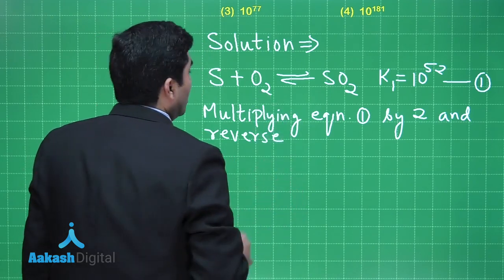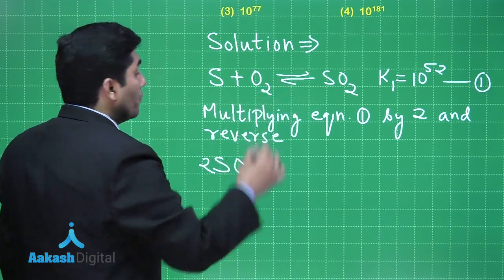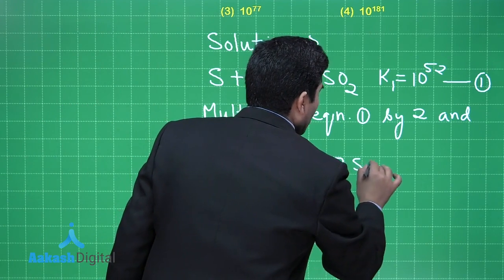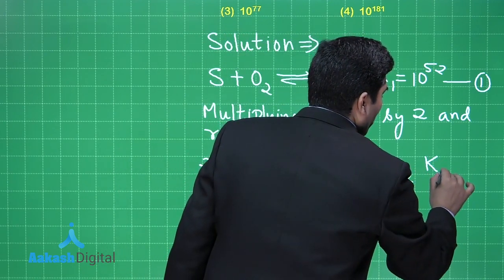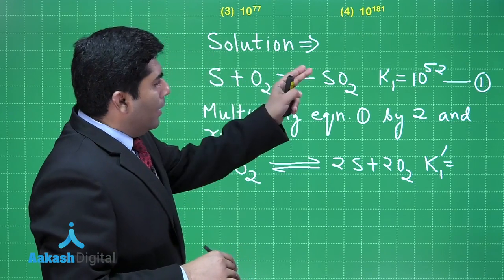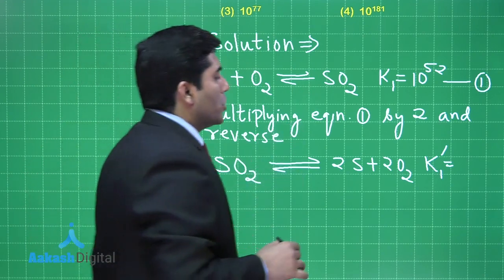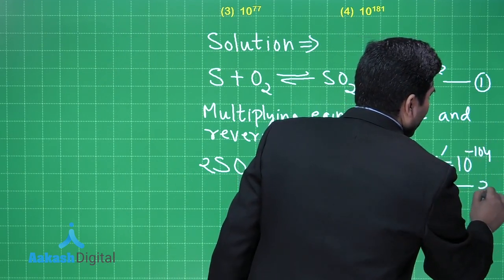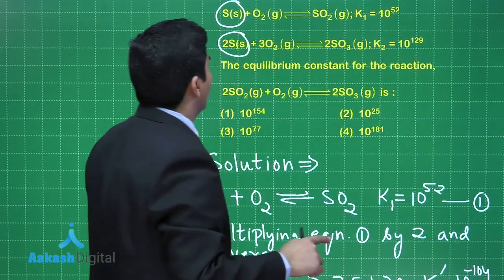After reversing and multiplying equation 1 by 2, we get 2SO₂ in equilibrium with 2S plus 2O₂. The equilibrium constant K dash equals 10 to the power minus 52 raised to the power 2, which gives 10 to the power minus 104. Let us call this equation 2.